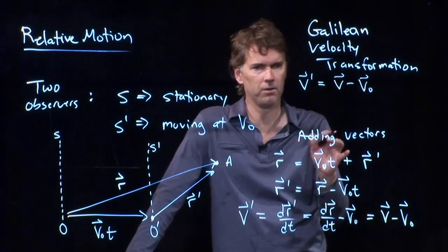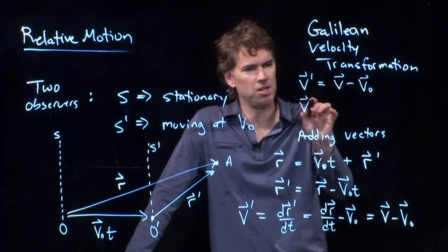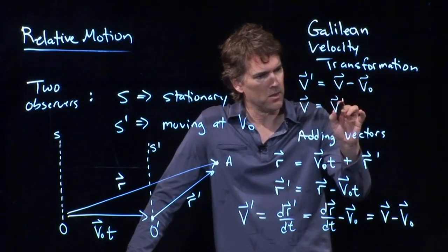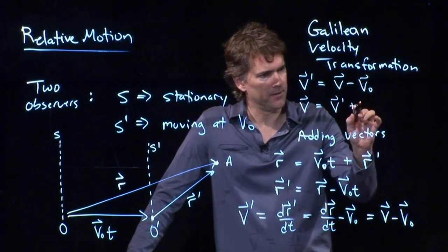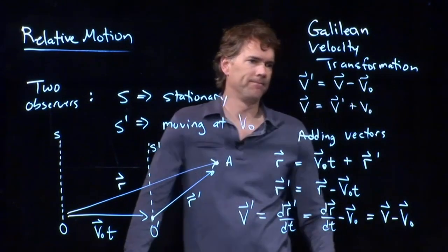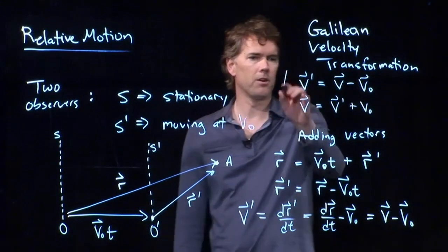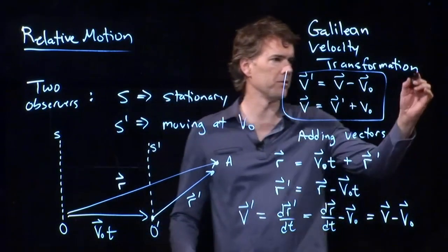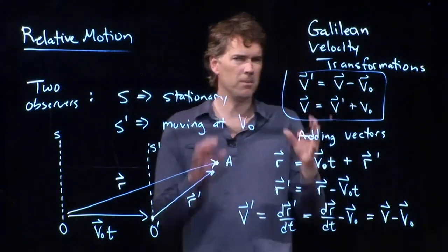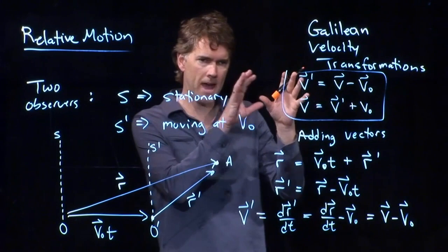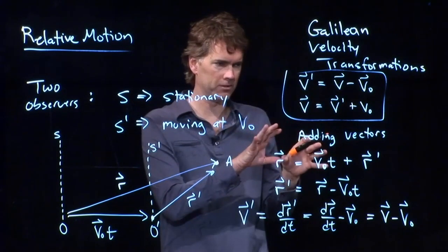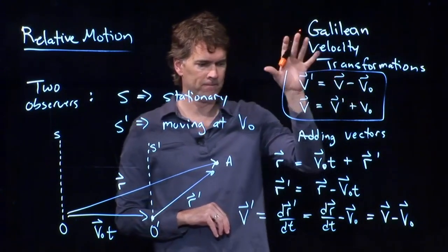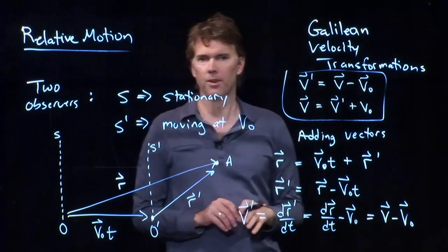You can, of course, rewrite this. The velocity in the stationary frame is going to be the velocity in the moving frame plus that. Okay? And so these are known as the Galilean velocity transformations. And it should make sense to you, right? You just add or subtract velocities. But you have to treat them as vectors. Okay? Let's try an example of this.